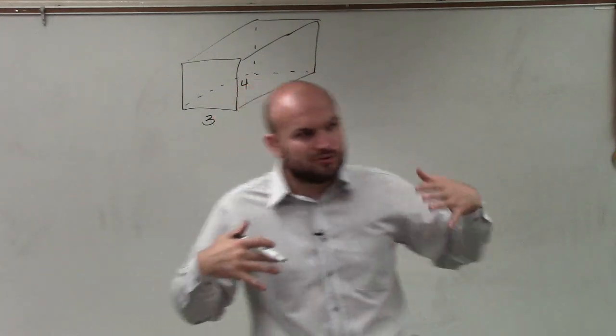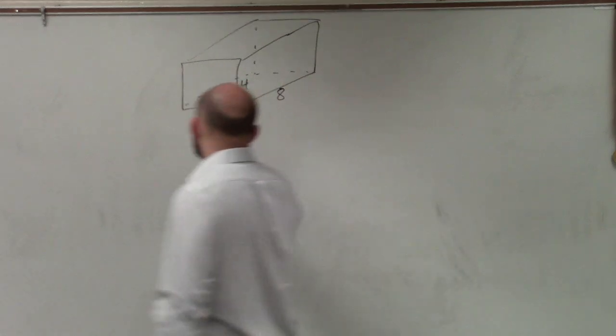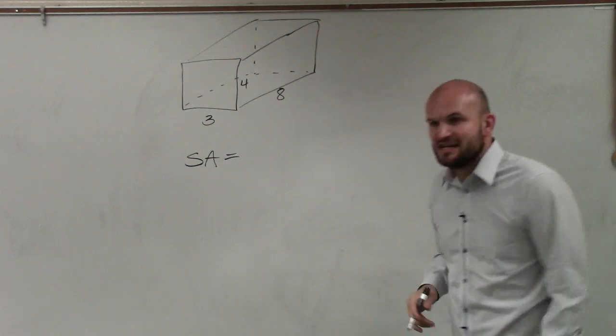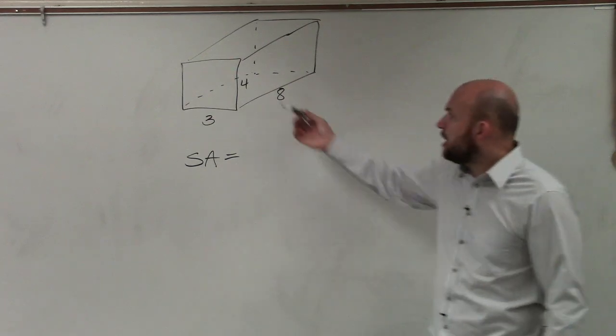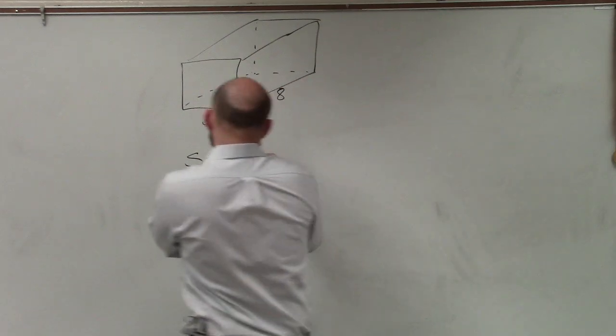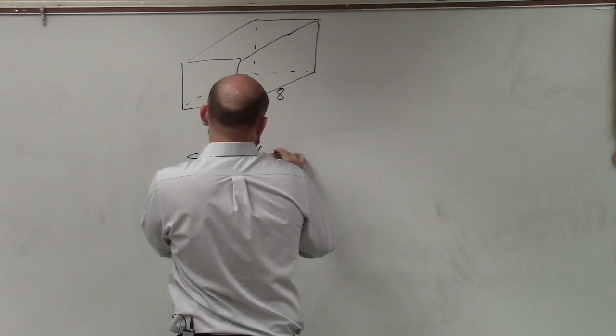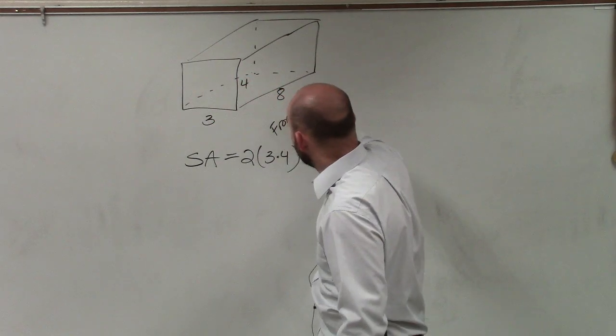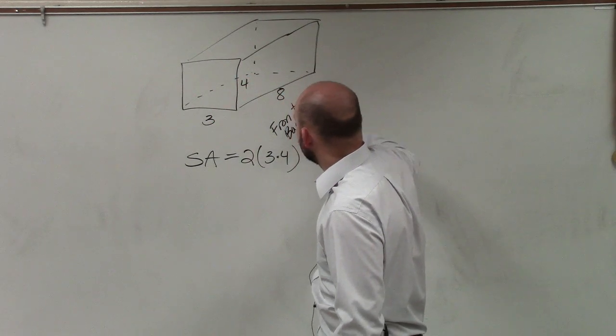So we don't need to do something more often than we already have to. So to find the surface area, all I'm going to do is find the areas of the front and the back and then multiply it by 2. So I'll say 2 times 3 times 4. That represents the area of the front and the back.